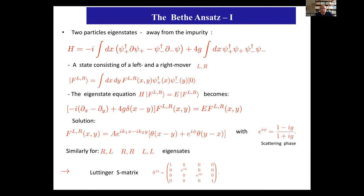Then you go to two particles. Away from the impurity you solve just the Luttinger Hamiltonian and can look at left-right, right-right, or left-left movers. For right-right movers: plug into the Hamiltonian, obtain a Schrödinger equation, solve it. If one particle is to the left of the other, you have amplitude A; crossing picks up a phase shift E^{iφ} = (1 − iG)/(1 + iG). You do this for all four combinations to get the S-matrix. Now you want to combine one-particle and two-particle solutions by taking all orderings of two electrons plus one impurity — three factorial regions — and stitching them together consistently.